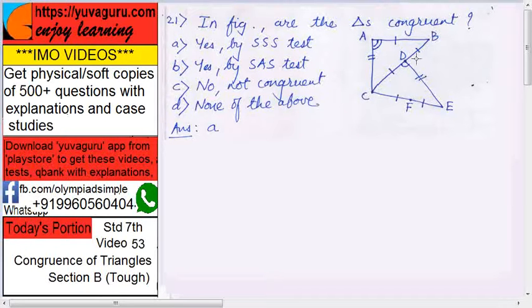BD is congruent to, it is given that somewhere FE, these two sides are congruent, and DC is congruent to CA, because the lines are same. So in fact, all the four are congruent.